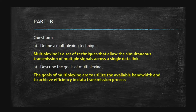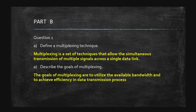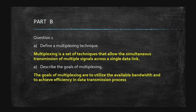Question B asks you to describe the goal of multiplexing — what is the purpose and objective of this technique? The goals of multiplexing are: to utilize the bandwidth available in the network, and to achieve efficiency in the data transmission process — in other words, to speed up the transmission process.